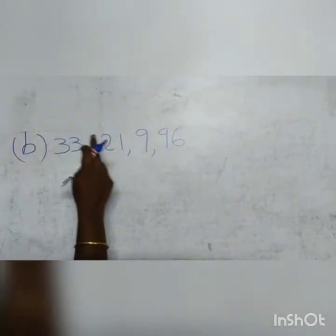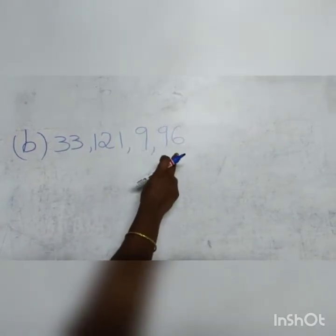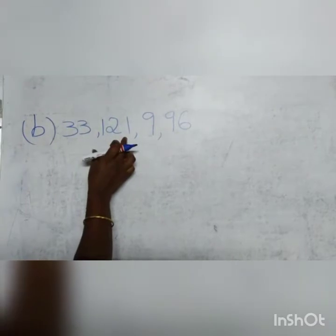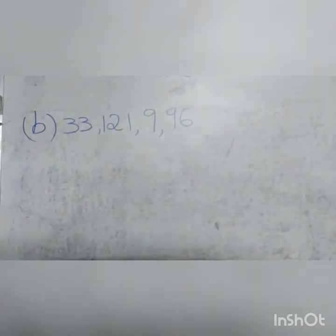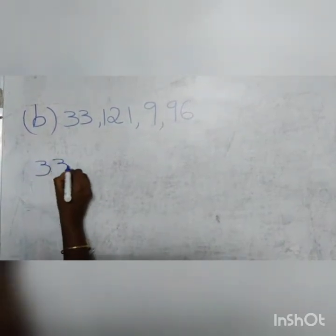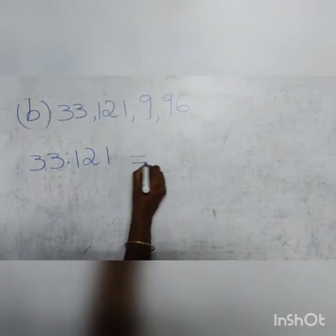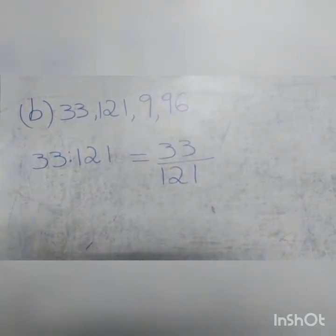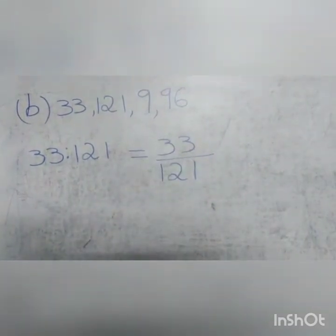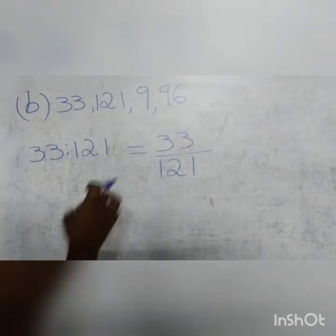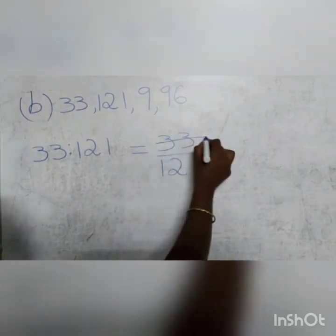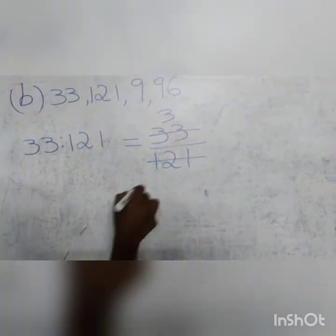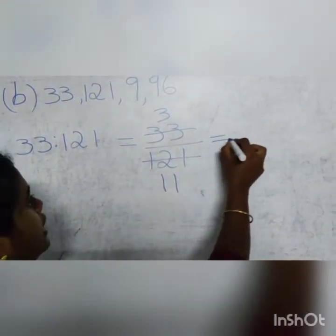Next question B: 33, 121, 9 and 96. To check if these numbers are in proportion, first we find the ratio of 33 and 121, then find the ratio of 9 is to 96. So first, write 33 is to 121, which can be written in fractional form as 33 divided by 121. Since both 33 and 121 are multiples of 11, we can divide both numerator and denominator by 11. Since 11 threes are 33, we write 3. And since 11 elevens are 121, we write 11. The ratio becomes 3 is to 11.